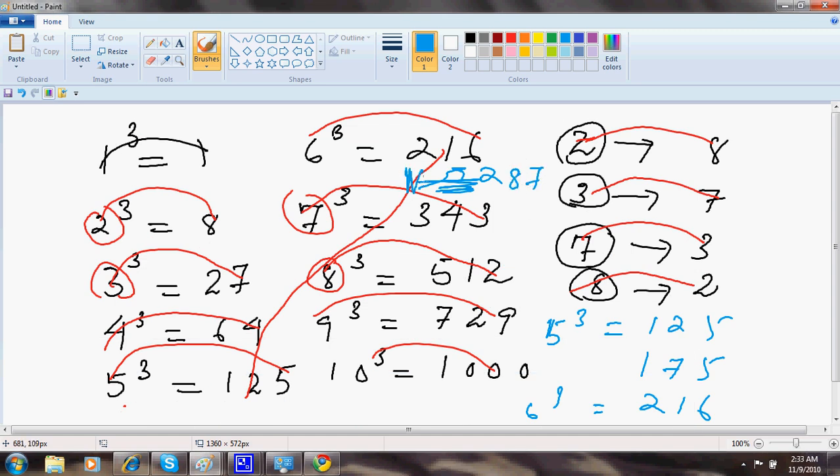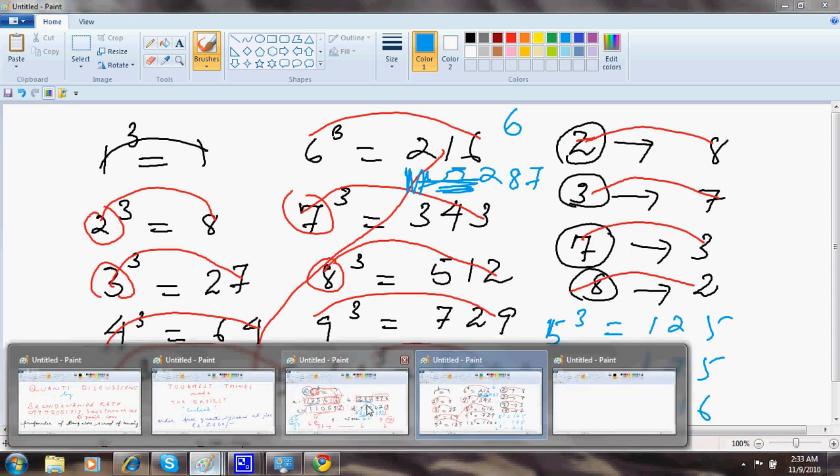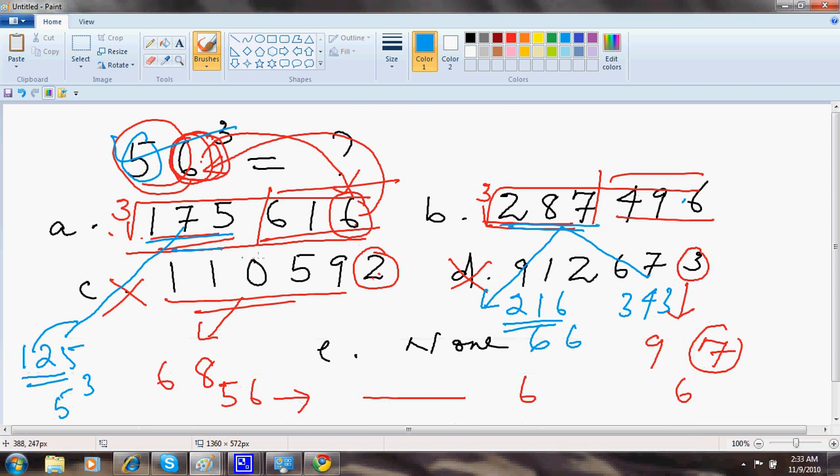So any number lying between this will have 6 in the first digit, and depending on the last digit you can make out. So this kind of sum will never have a non-answer correct.